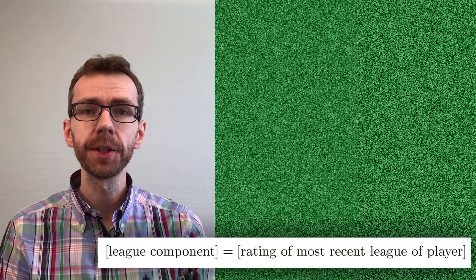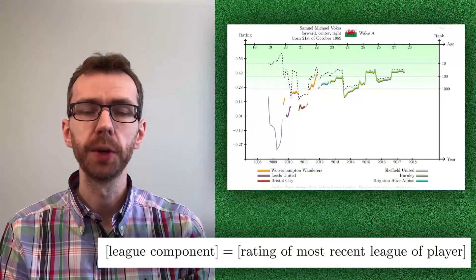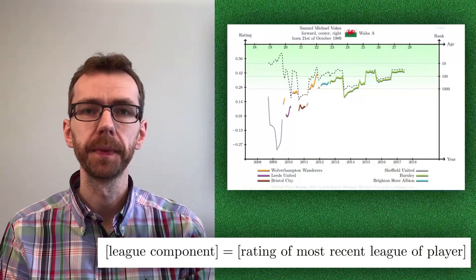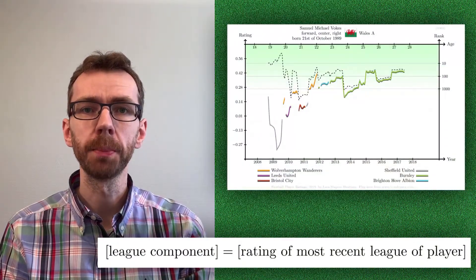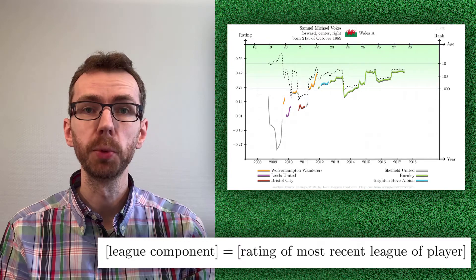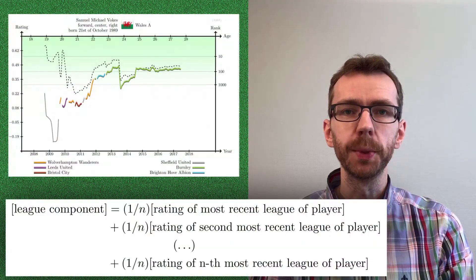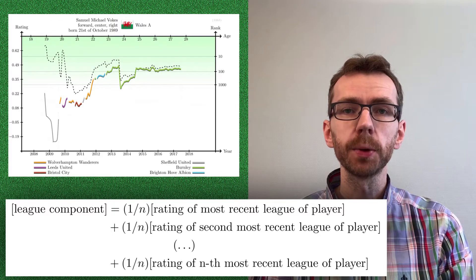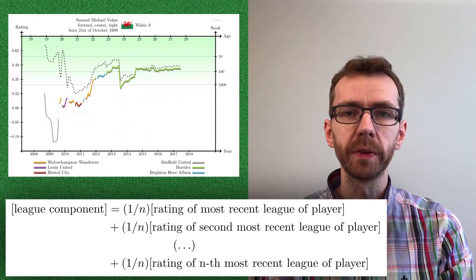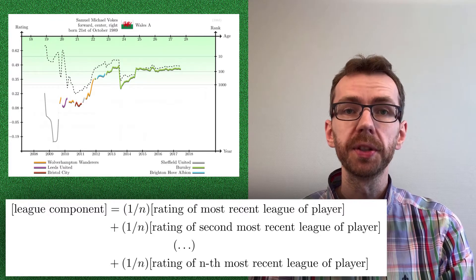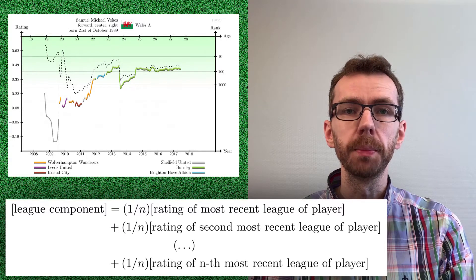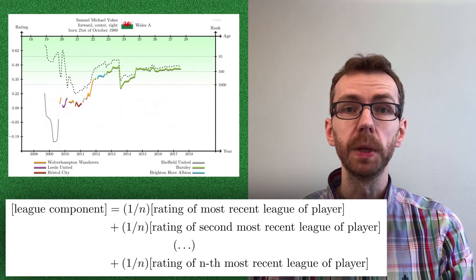At first we only considered the current league for each player. This led to jumps in the ratings of players when moving from one league to another. Adding components for all the leagues in which a player has appeared smoothed out some of these jumps. However, could there still be better ways of compensating for the difference in playing strength between leagues?